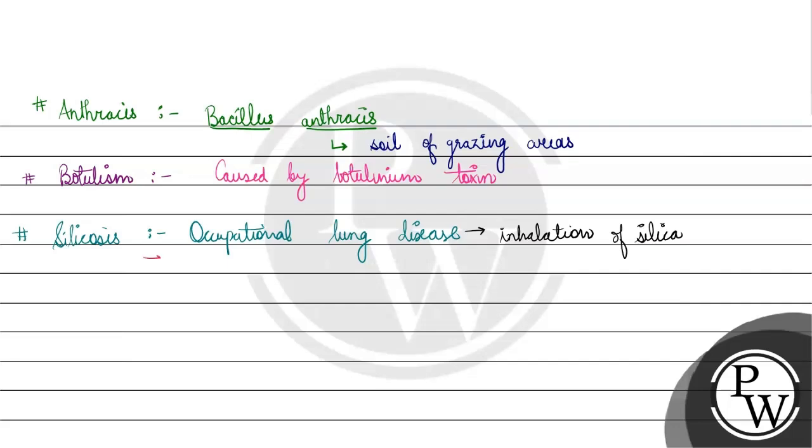So, jab silica inhale ho jata, uske baad kya hota? Yahan per formation hoga of fibrous tissue. Fibrous tissue masses me form hoga. In masses ban banhenge nodules of the dense fibrosis. Yeh jo silicosis hota hai, it is a type of interstitial lung disease.